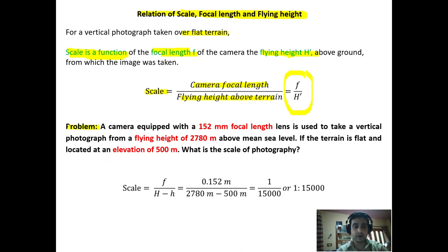So there's a problem to understand it further. A camera is equipped with 152 mm focal length. It has a flying height of 2780 and flight located at an elevation of 500 meters. What is the scale of the photography?